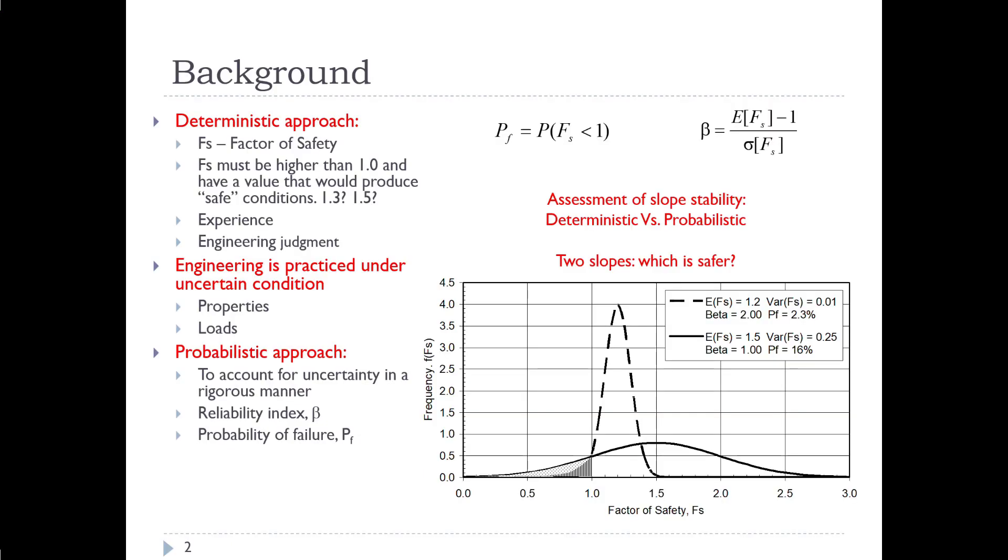Just to give you a little bit of background on this topic, we often focus on deterministic analyses of sites and we calculate a factor of safety. We assume that the factor of safety must be higher than one and must produce a safe condition which we interpret to be either 1.3 or 1.5. However, this approach has certain drawbacks in that we don't have a clear understanding of what the risk we are exposed to under that approach.